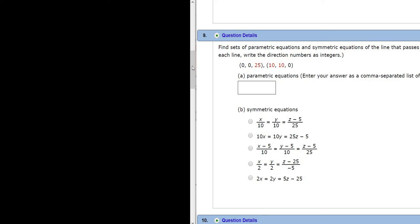In this problem, we're given two points, and we have to find both the parametric equations of the line and the symmetric equations of the line. So the points are (0, 0, 25) and (10, 10, 0).